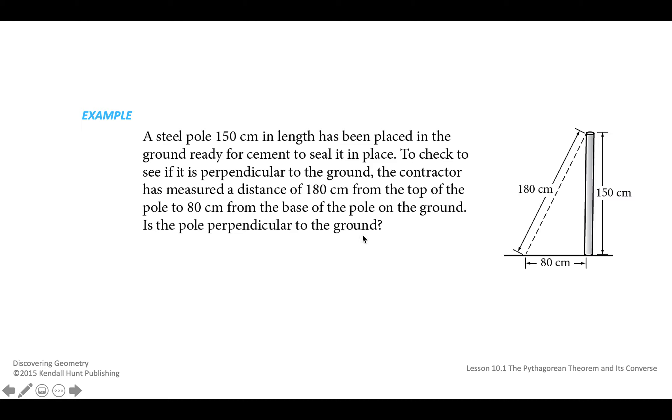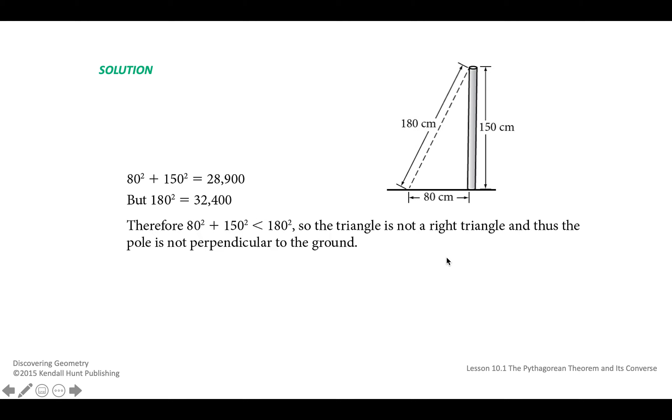So the idea behind this one is we know that this picture forms a right triangle if the numbers satisfy the Pythagorean equation. So if they satisfy that equation, we know that it's a right triangle, and then we know the pole is perpendicular to the ground because they'll make a right angle. If they don't satisfy the equation, then it's not a right triangle.